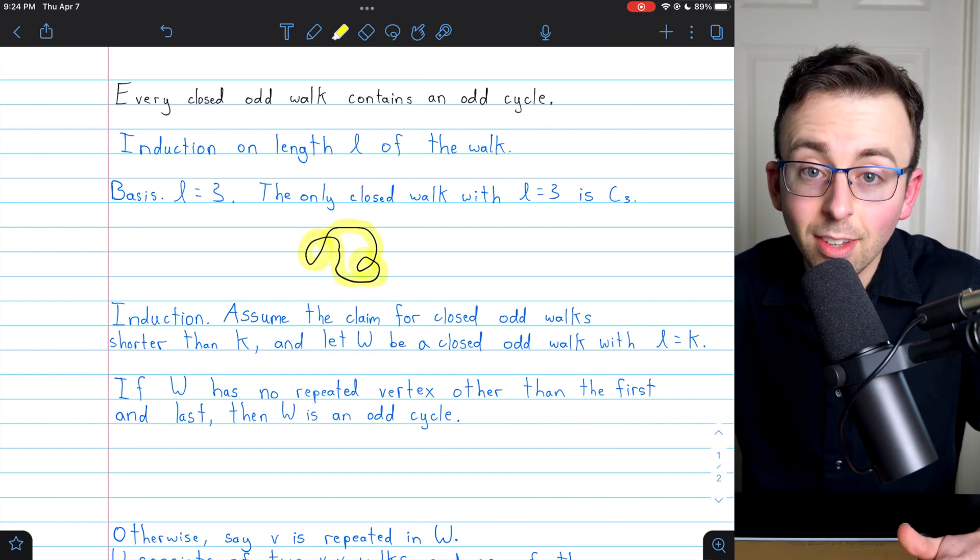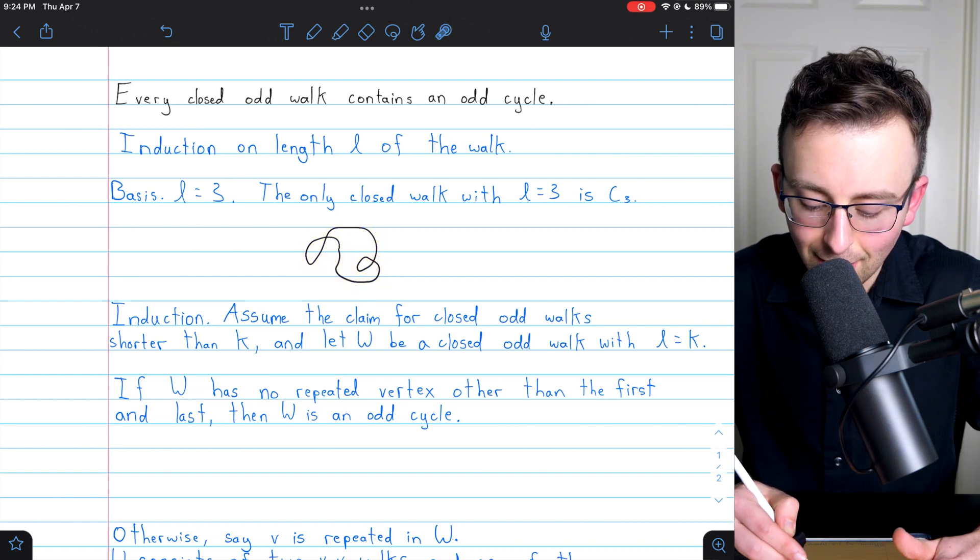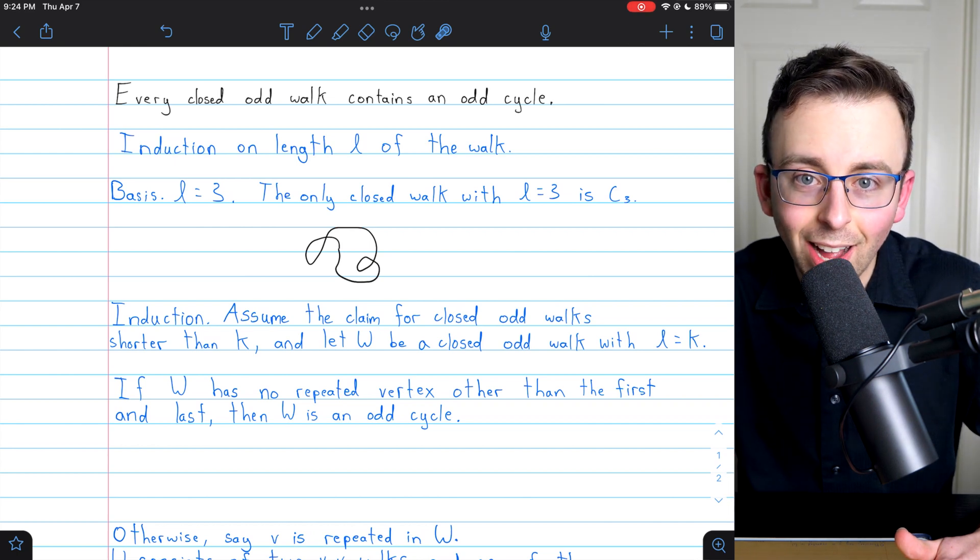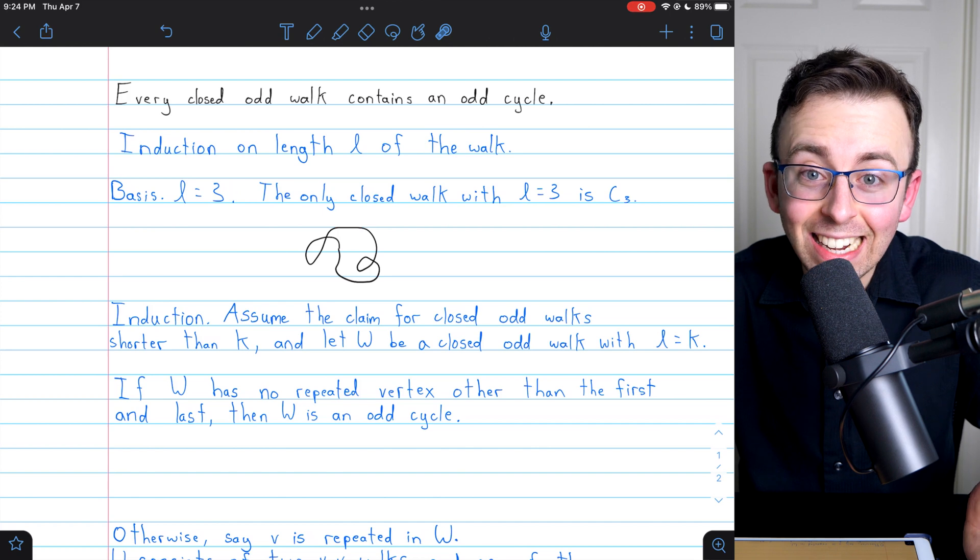It consists of cycles. We see sort of three cycles in this closed odd walk. And at least one of those cycles has to be odd itself.